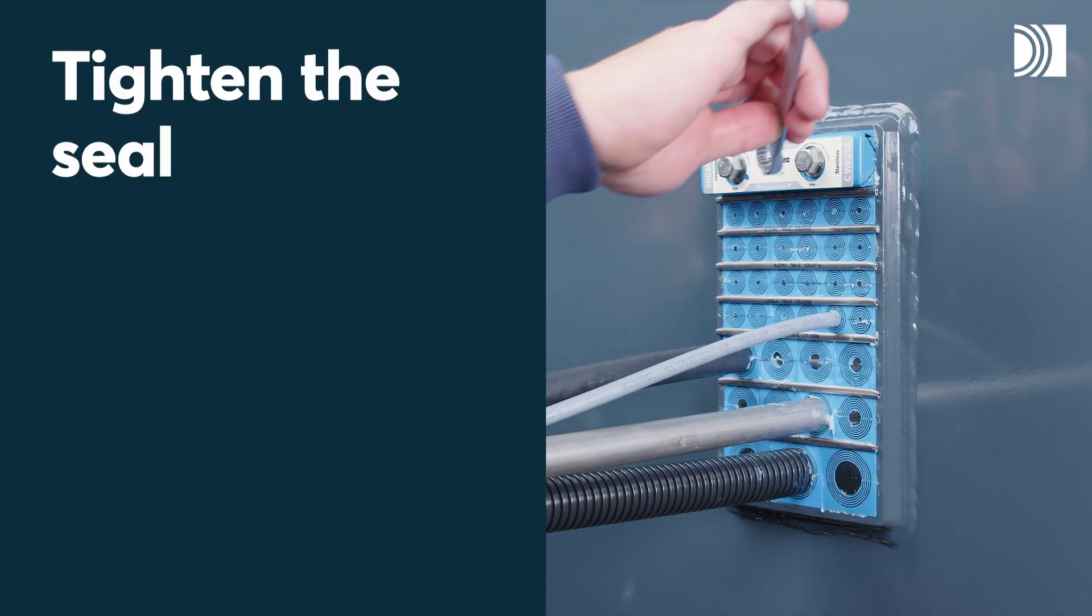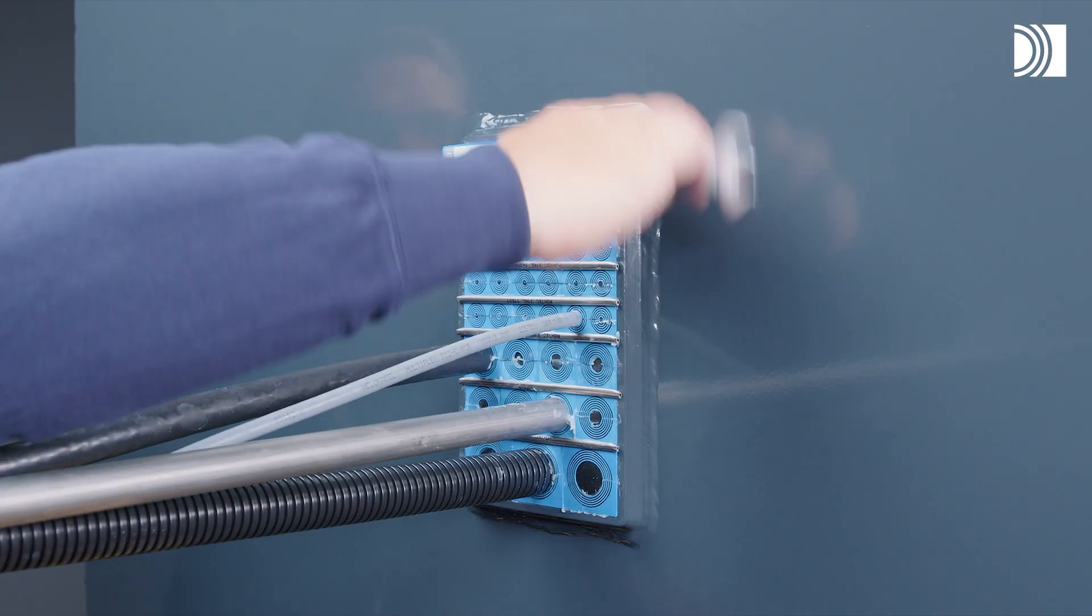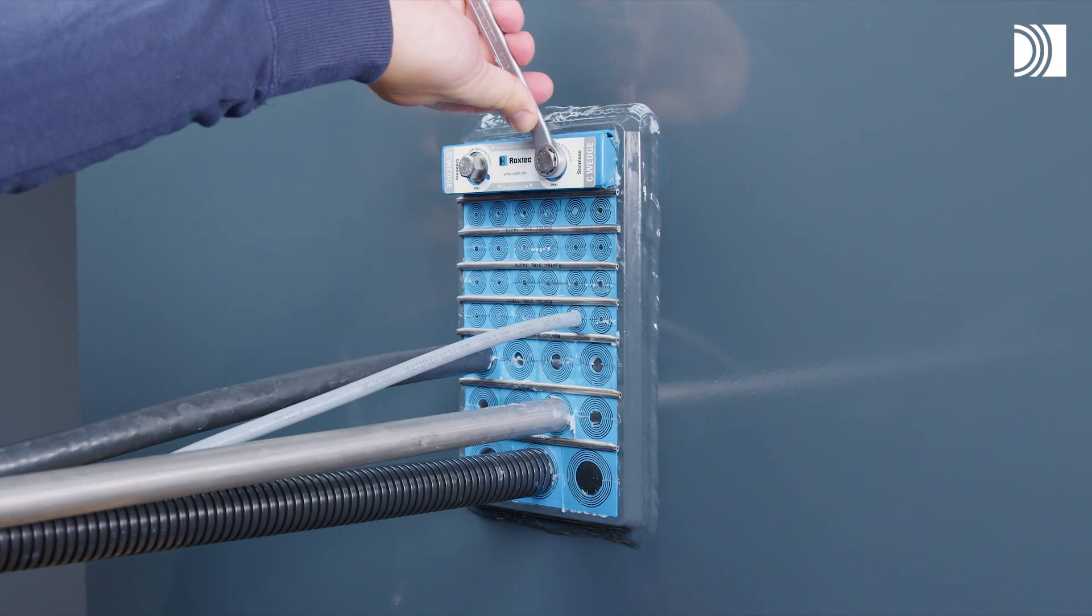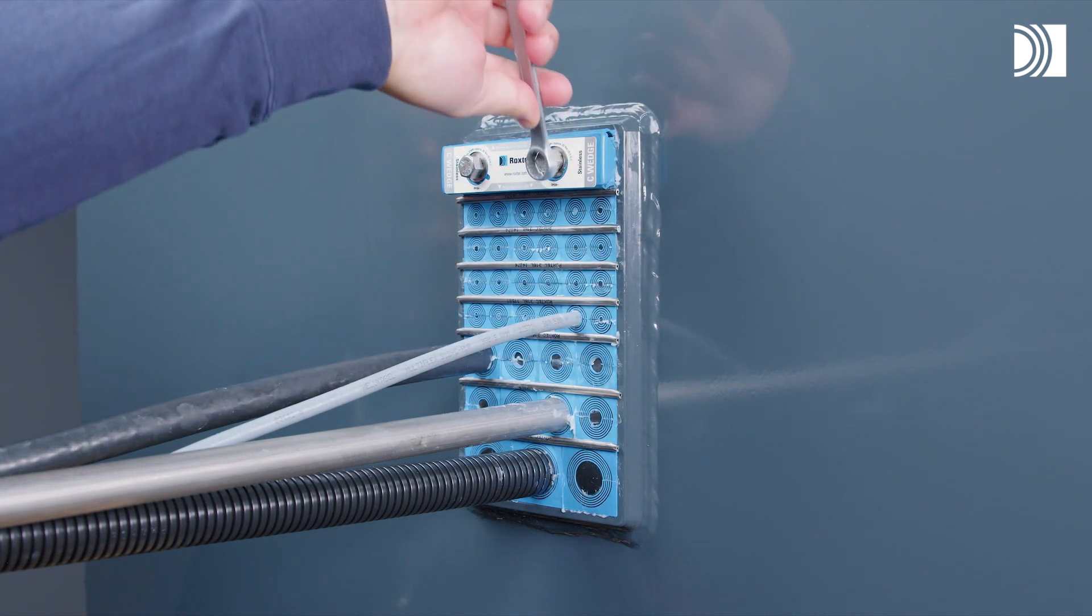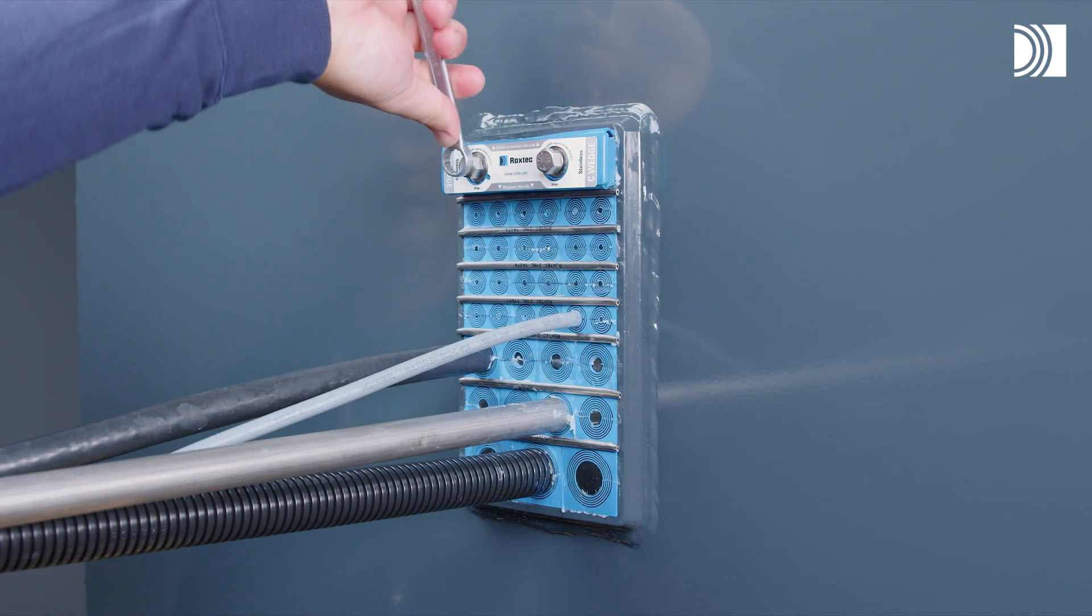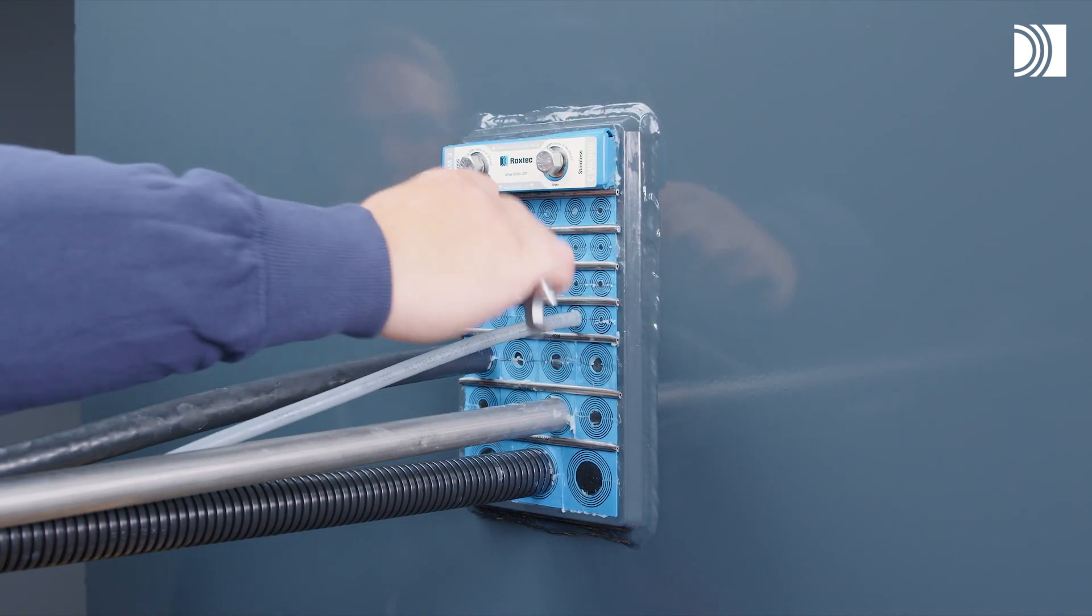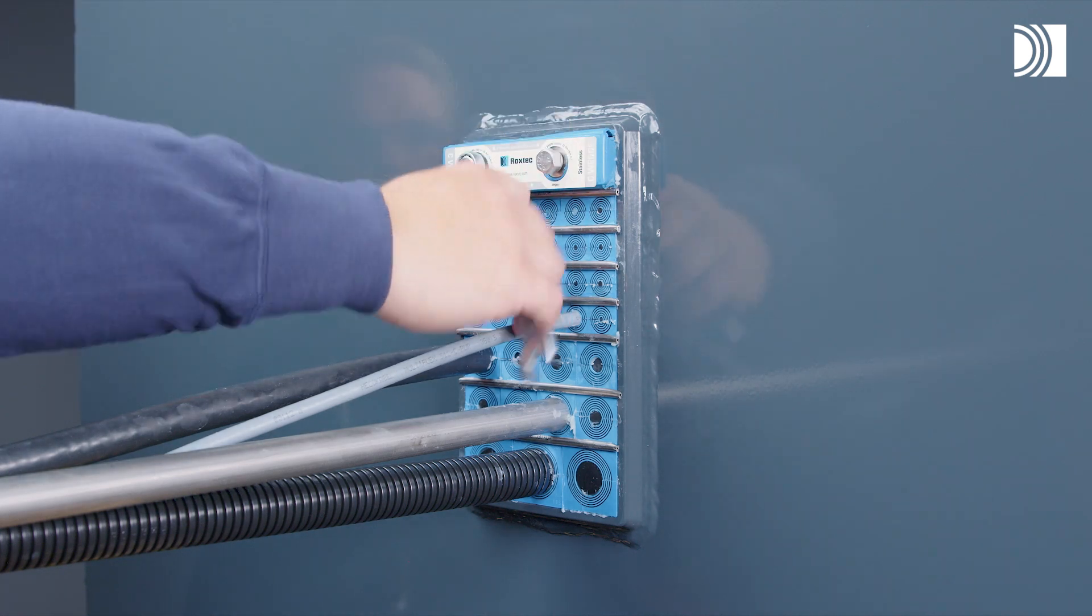Tighten the seal. Tighten the screws of the compression unit alternately until full stop. Visible excess lubricant is a sign of good compression. Make sure all modules are placed correctly and fully inserted after compression.